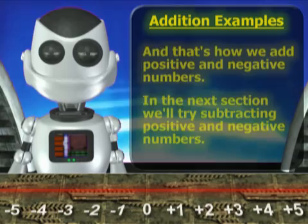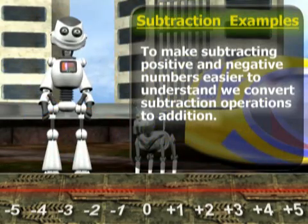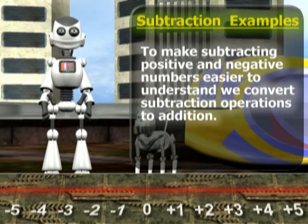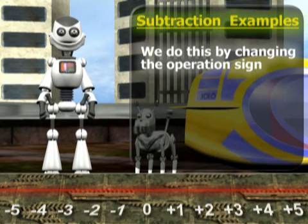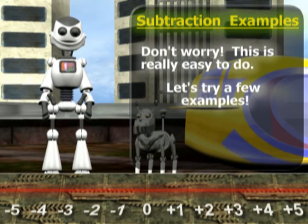In the next section, we'll try subtracting positive and negative numbers. To make subtracting positive and negative numbers easier to understand, we convert subtraction operations to addition. We do this by changing the operation sign and the sign of the second number. Don't worry, it's really easy to do. Let's try a few examples.